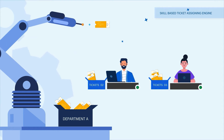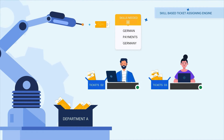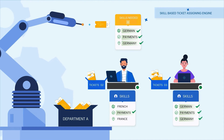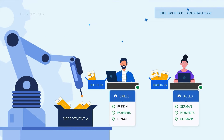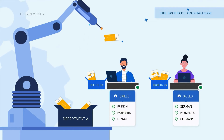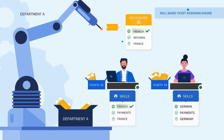The skill-based automation engine skims the ticket and identifies the required skills. It then assigns the ticket to the agent who has the most number of skills that the ticket requires.